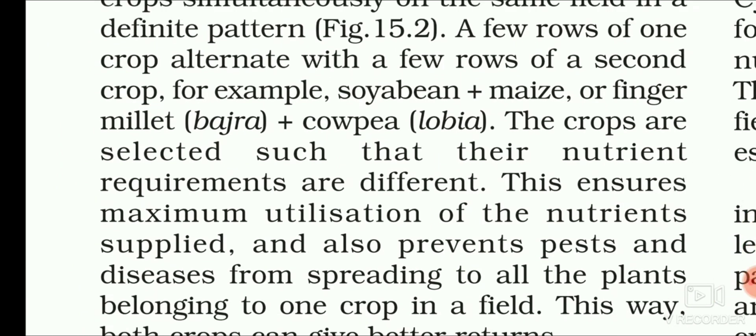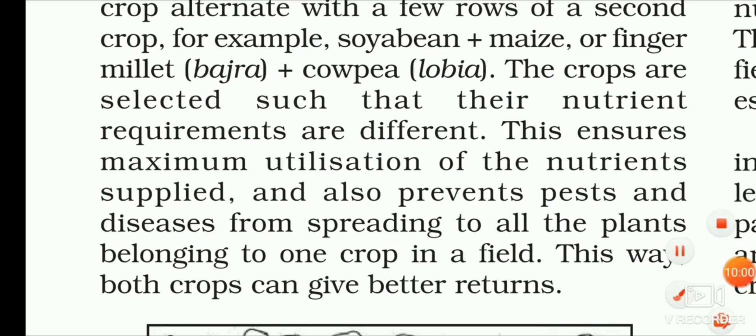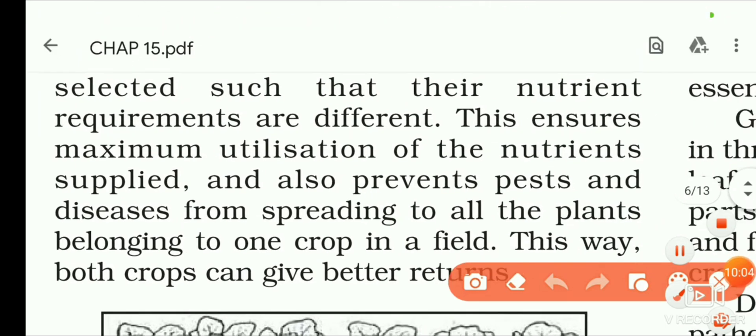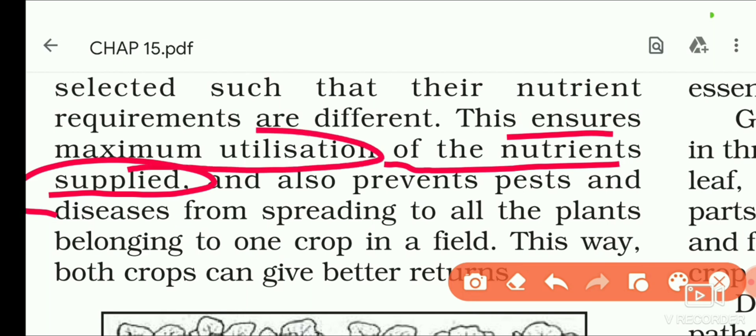Crops are selected such that their nutrient requirements are different. This ensures maximum nutrient supply. Nutrients are present in soil, and because the requirement is different, there is no competition.